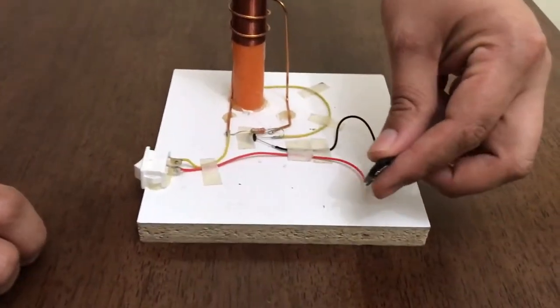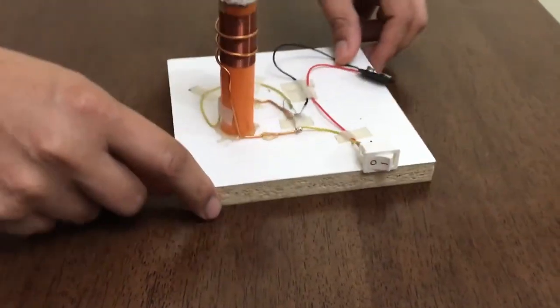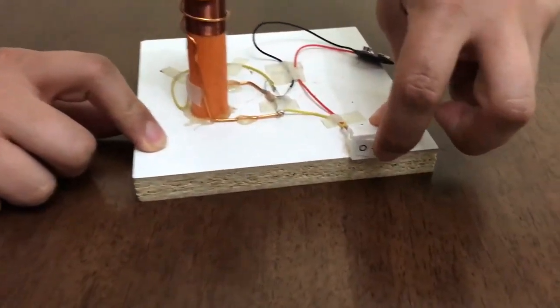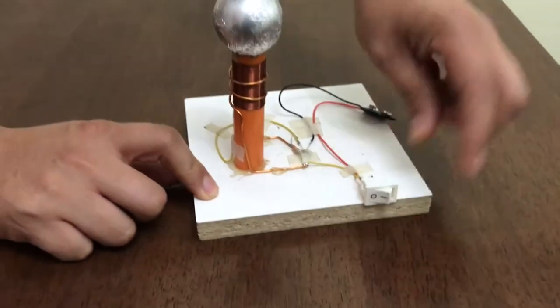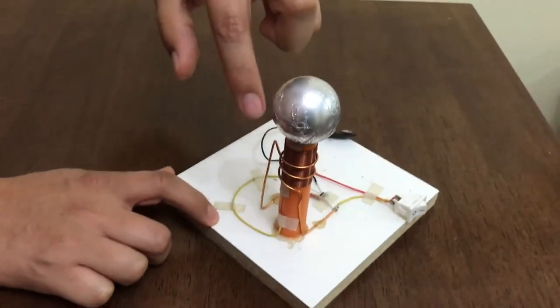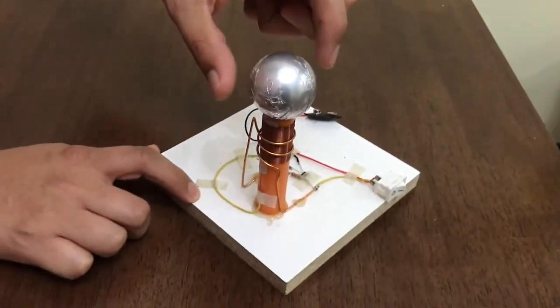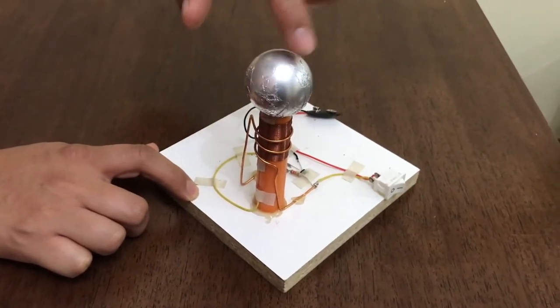Esto que está aquí es el adaptador de batería. A un costado tenemos un interruptor encendido y apagado. Esto que está acá, esta esfera, corresponde a una pelota de ping-pong y esto es papel de aluminio.